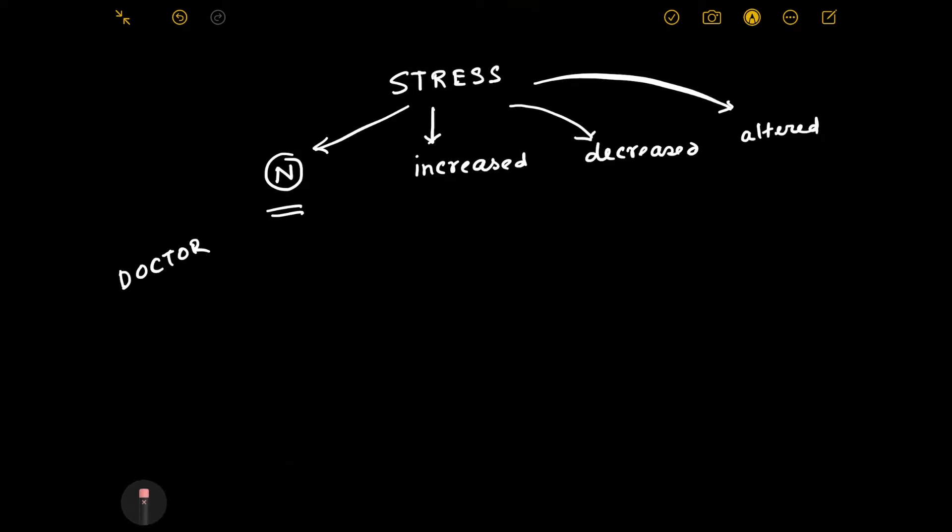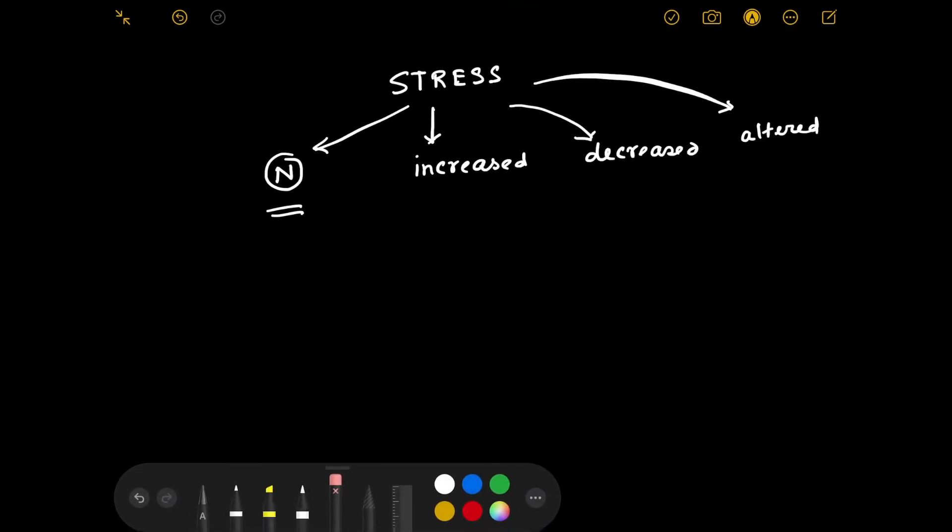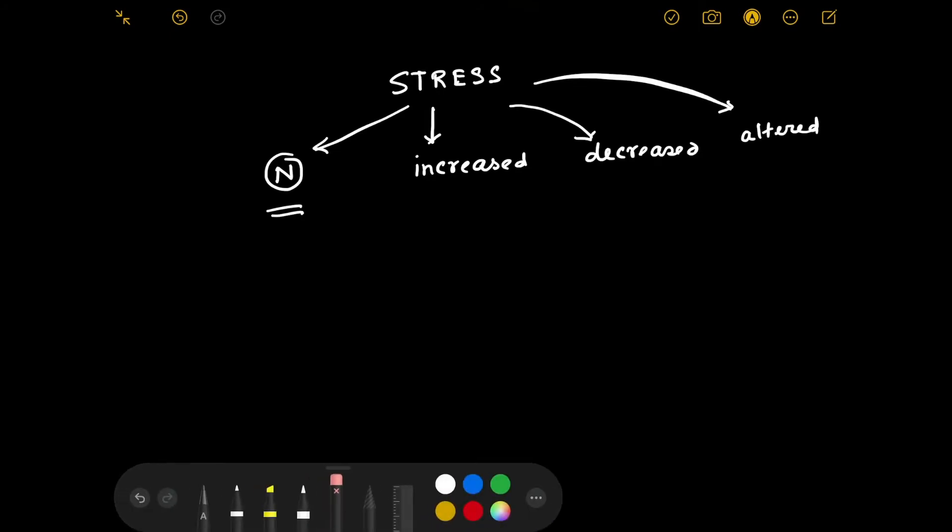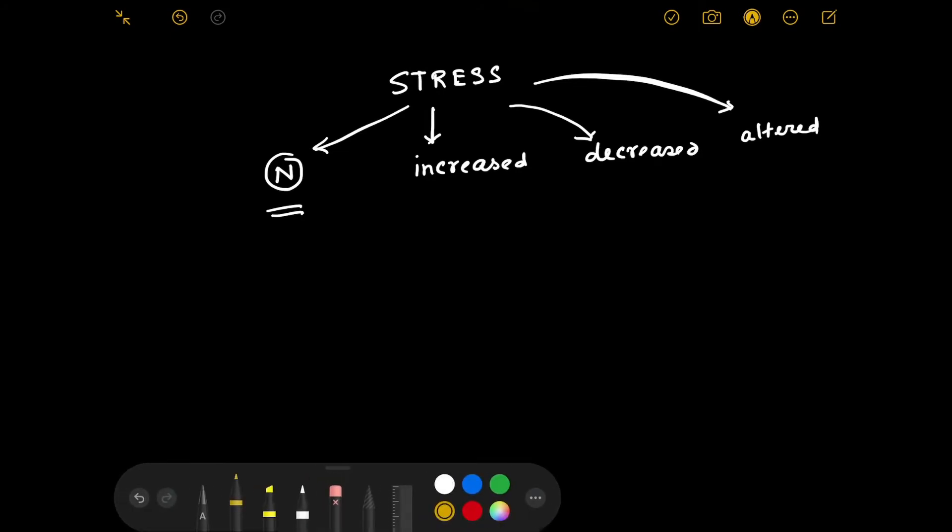Now if there is a normal stress condition, then what will happen to the cell? In normal stress condition, there will be no adaptation, absolutely no adaptation, because the normal cell can deal with this problem very easily.